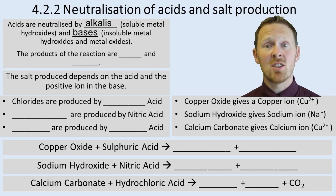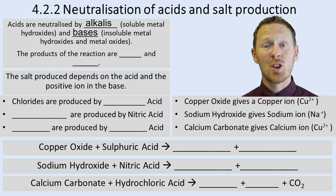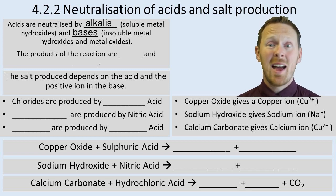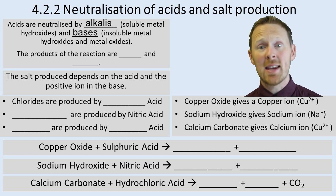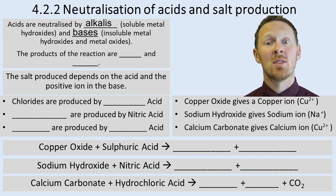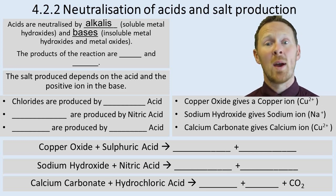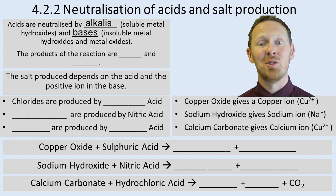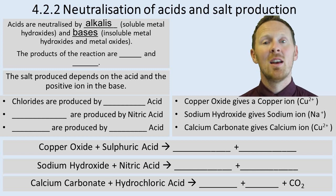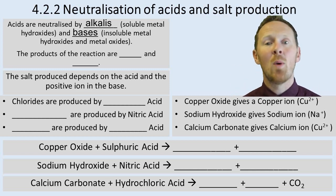Acids are neutralised by alkalis and by bases. Just a note on that: an alkali is also a base, but an alkali is a special type of base — it's one that is soluble in water, that has OH minus ions in solution. The product of the reaction between an acid and an alkali, or an acid and a base, is always a salt and water.